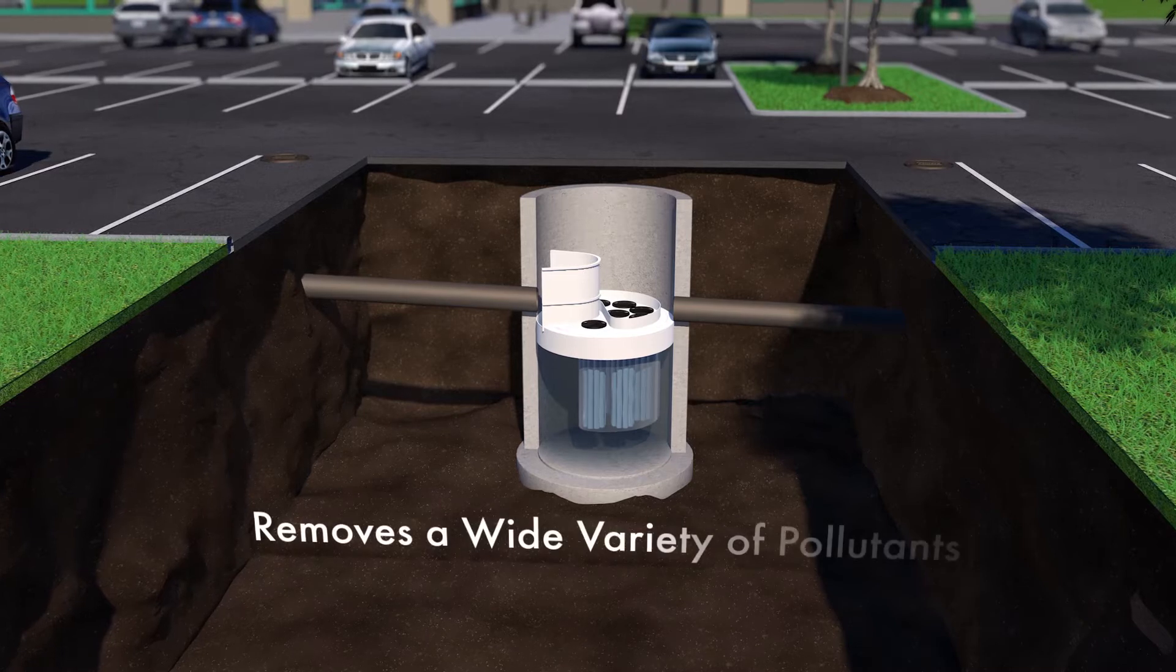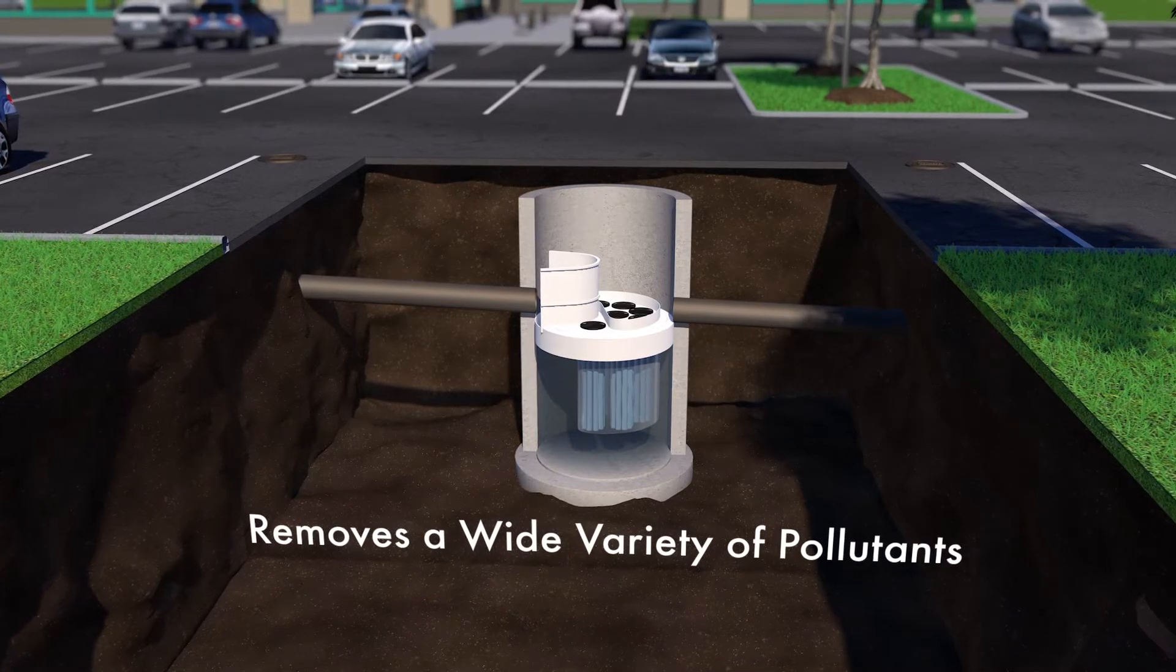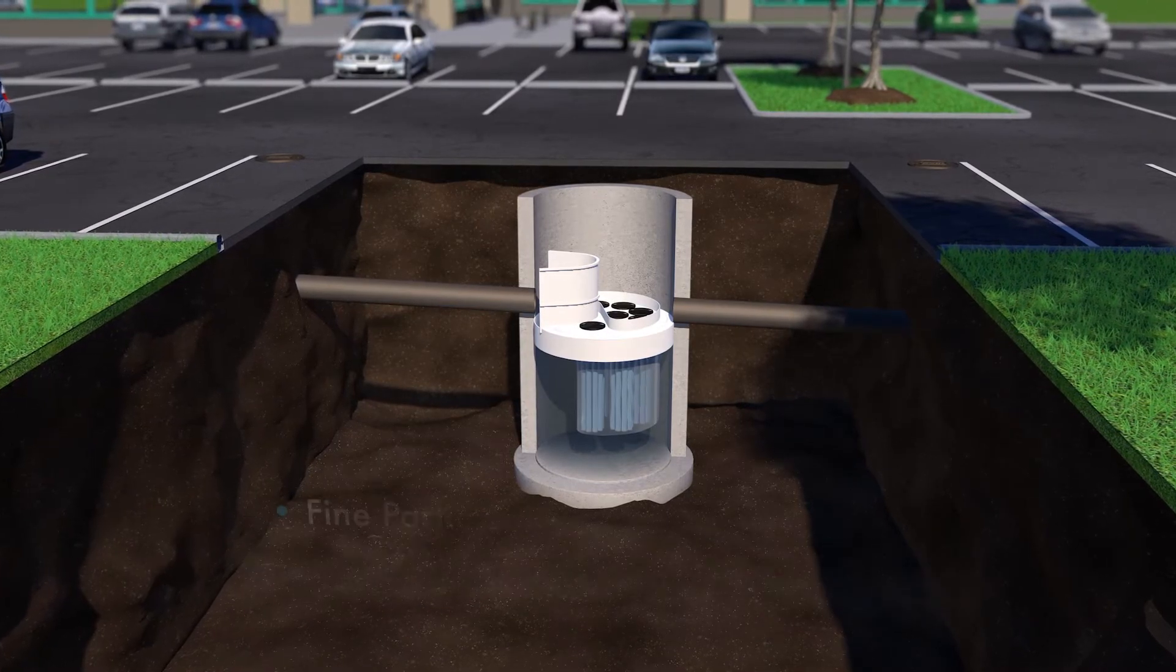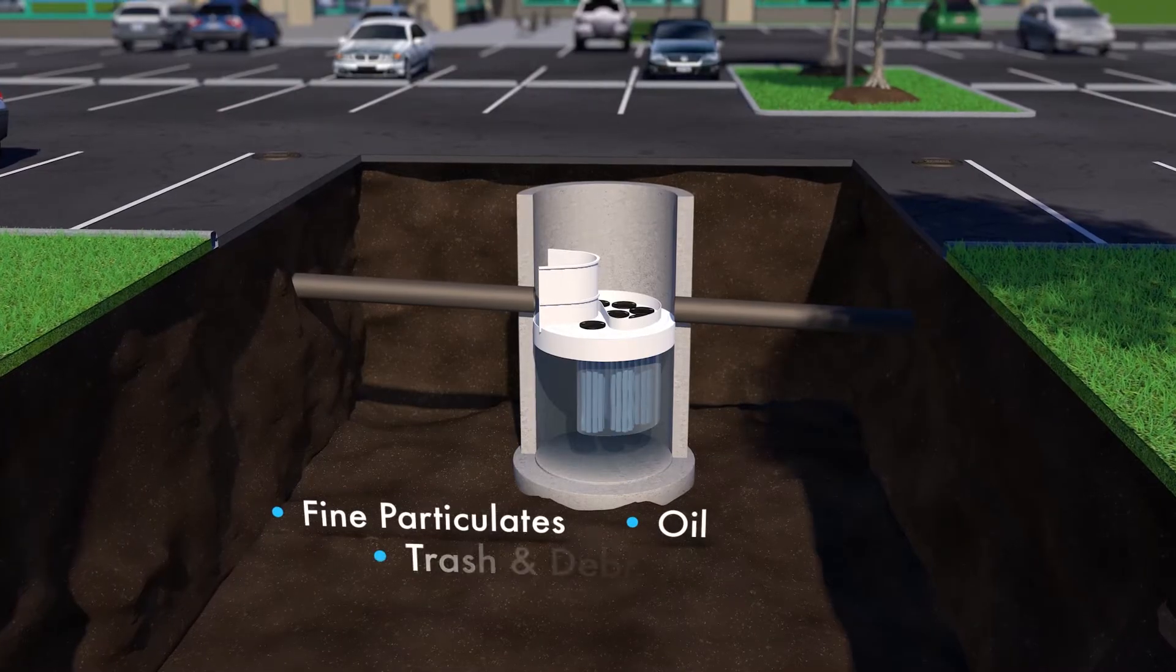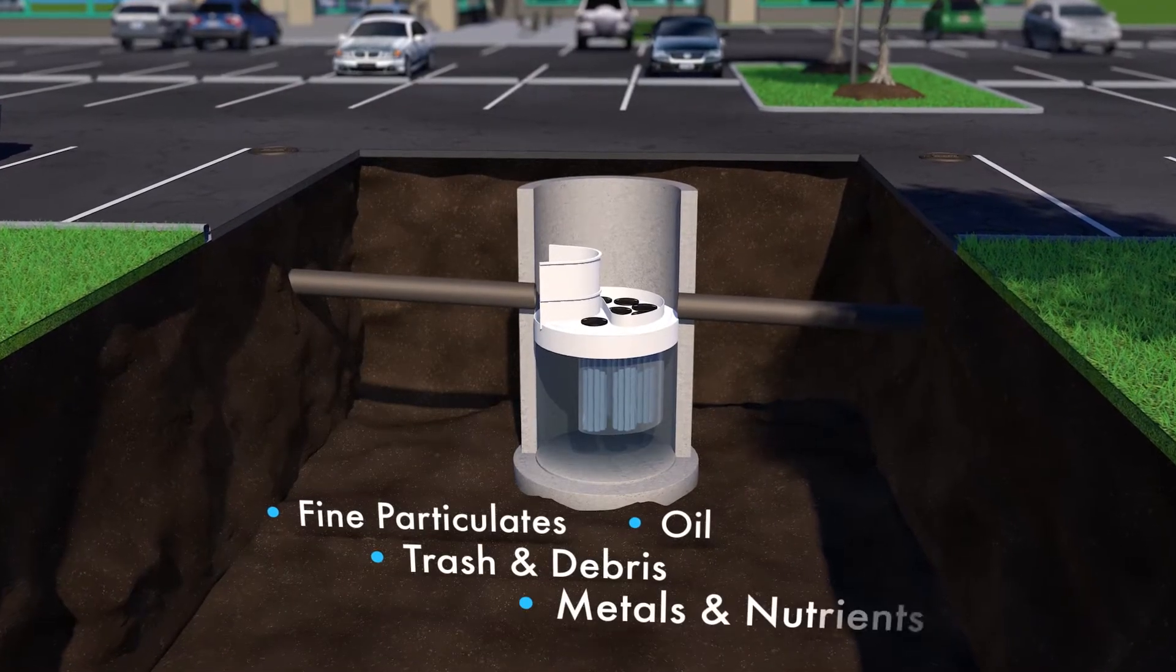The Jellyfish Filter removes a high level and a wide variety of stormwater pollutants, such as fine particulates, oil, trash and debris, metals and nutrients.